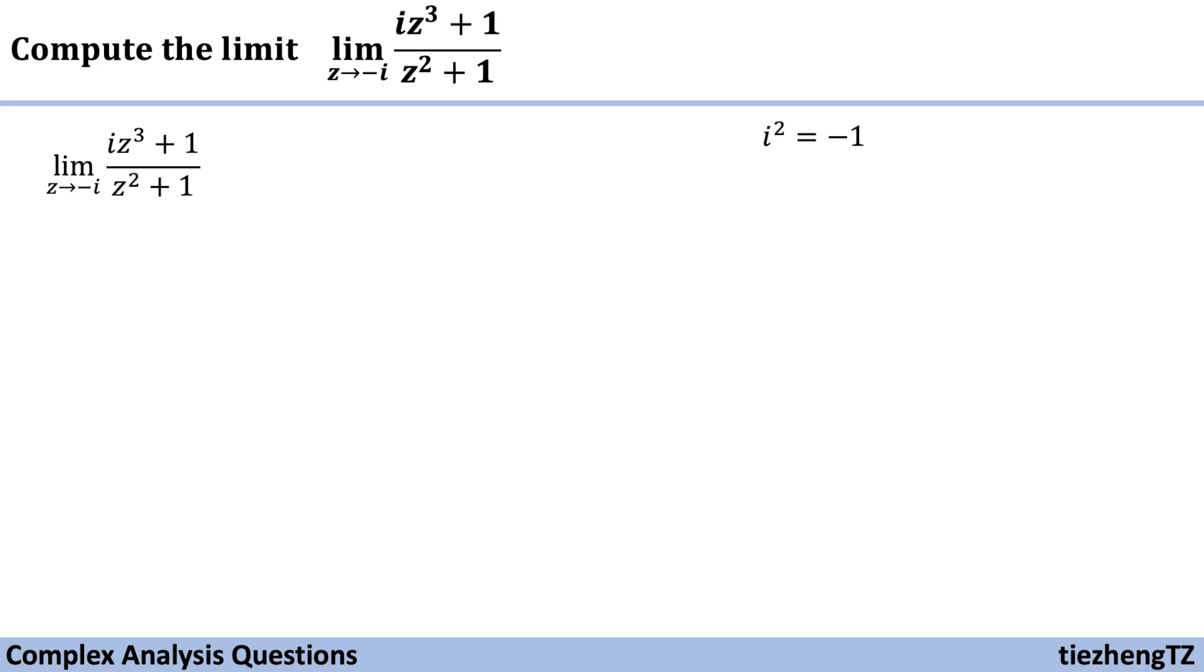So we already know i² equals -1, so i⁴ equals 1. Therefore, the numerator part of the given function can be rewritten as i times z³ plus i³ over z² + 1.